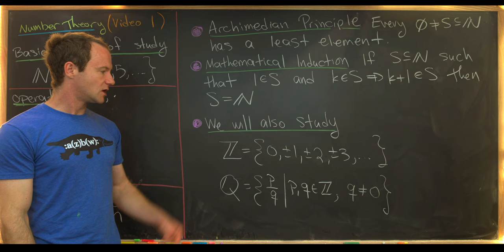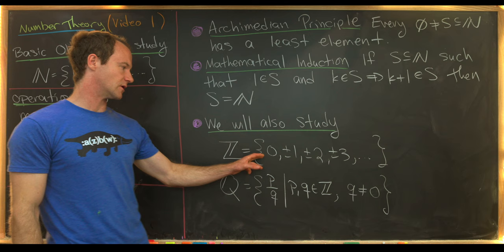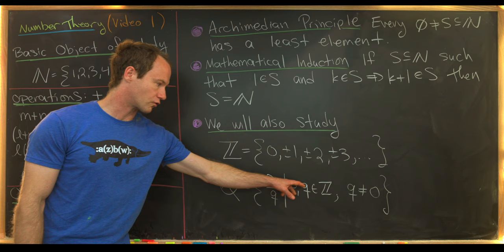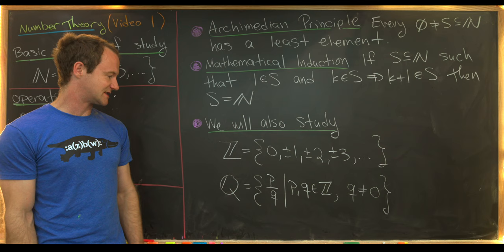We're also going to study the following sets, which are extensions of the natural numbers. The integers — that's all positive and negative natural numbers and zero: zero, plus or minus one, plus or minus two, plus or minus three, and so on. We'll also look at rational numbers — that'll be all ratios of integers where the denominator is not zero, like one half, one third, negative 99 over 54,000, and so on.